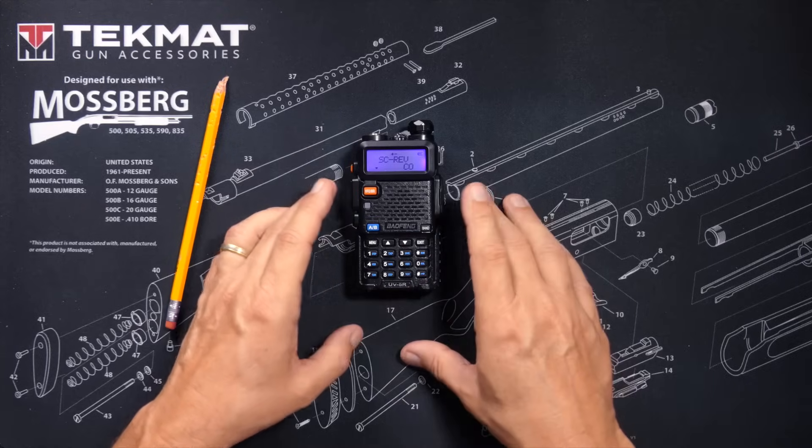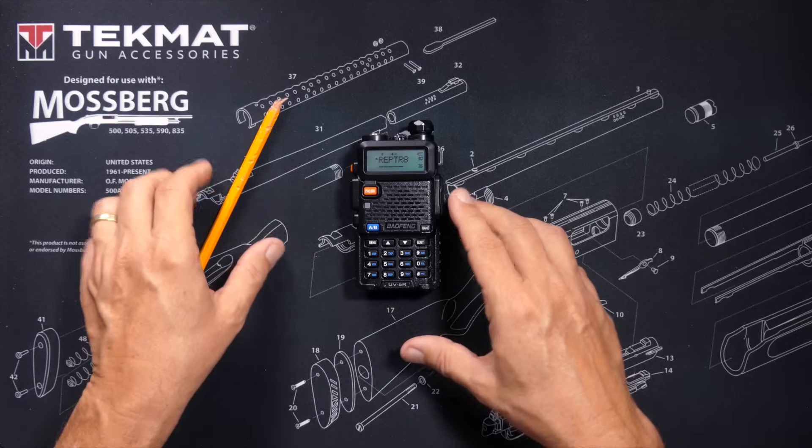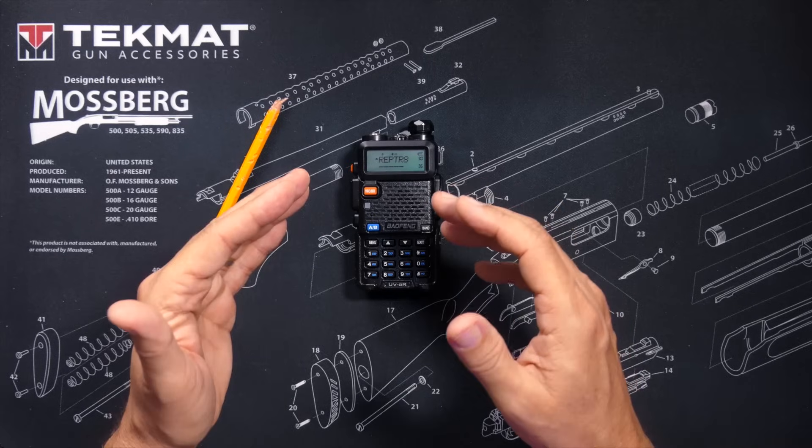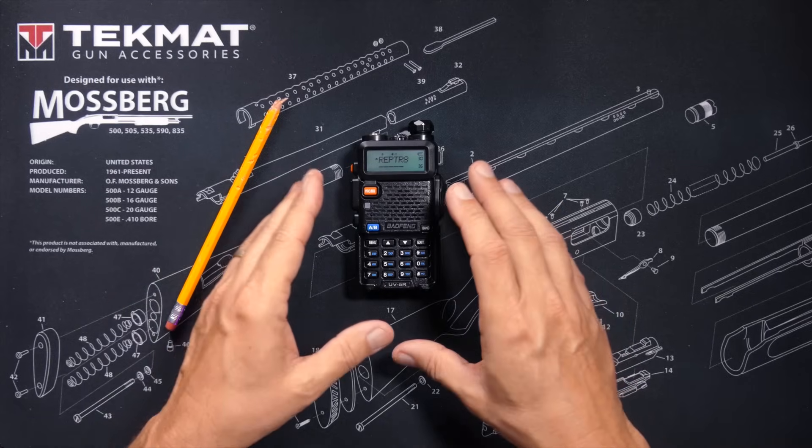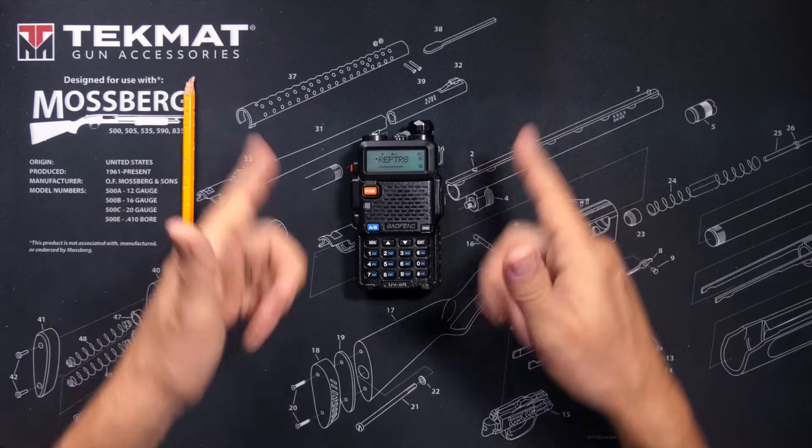CO stands for carrier operation. When set to CO, when the radio picks up a signal, it will stop scanning and listen to that signal as long as it hears anything. When the radio no longer hears the signal, it will resume scanning.